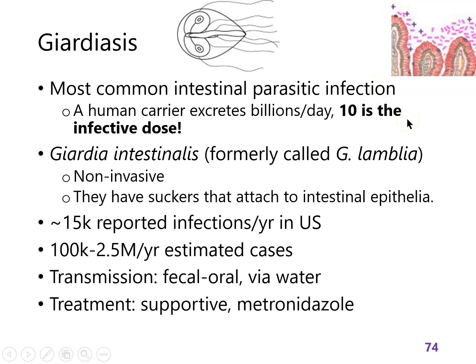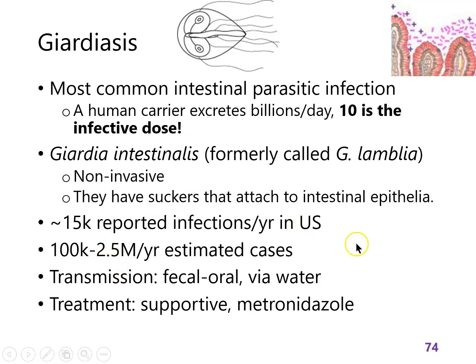There are a wide variety of estimates about how common giardiasis is. We know there are hundreds of thousands of cases per year worldwide, maybe as many as 2 million. In the U.S., there are something like 10,000 to 15,000 cases reported every year, but the actual number of cases could be as high as 2 million. So this could be very underreported if the infections aren't severe. Giardia is transmitted by the fecal-oral route — it grows in the intestine, is excreted in feces, and if that contaminates water you drink, it infects your gut.